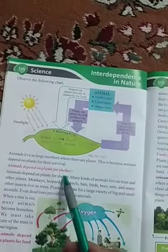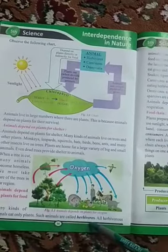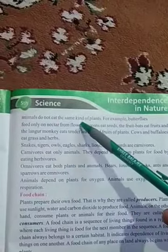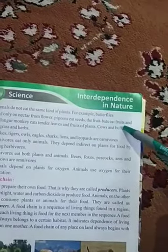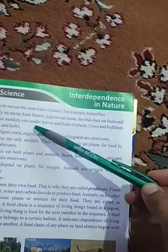Our second point is: animals depend on plants for food. Many kinds of animals eat only plants; such animals are called herbivores. All herbivores do not eat the same kind of plants. For example, butterflies feed only on nectar from flowers, pigeons eat seeds, fruit bats eat fruits, and langur monkeys eat tender leaves and fruits.